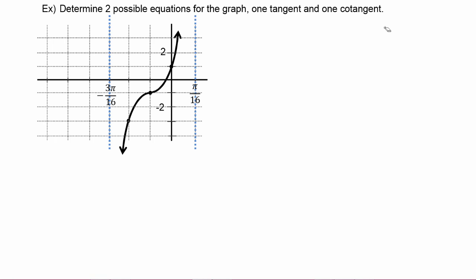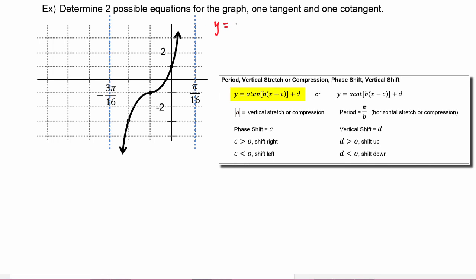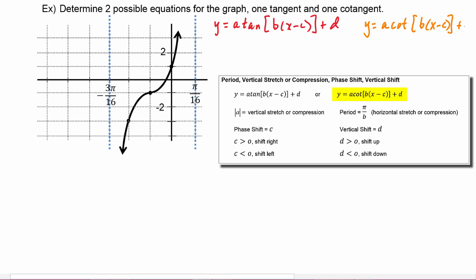Let's start off by writing the standard forms. We know it will look like y equals a tangent of b times (x minus c) plus d, or it will be y equals a cotangent of b times (x minus c) plus d. Our job is to find a, b, c, and d for each function.